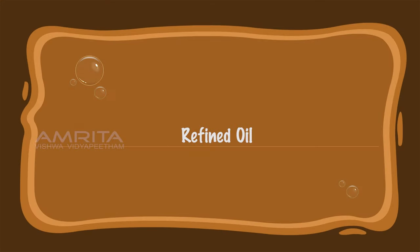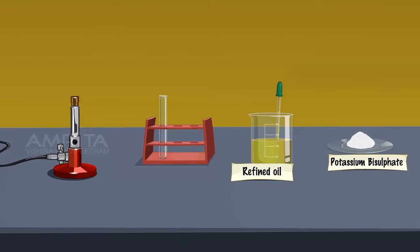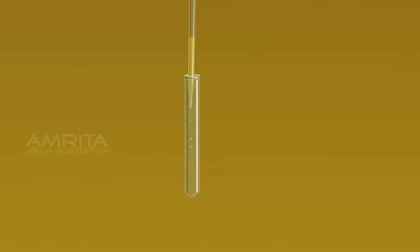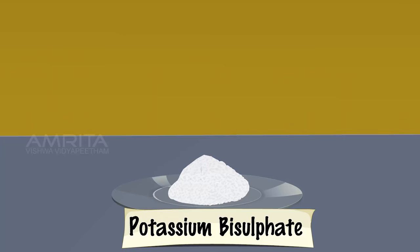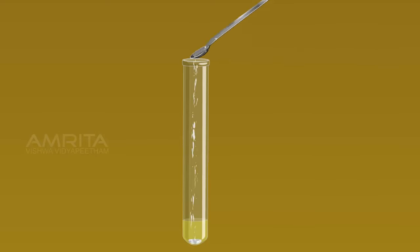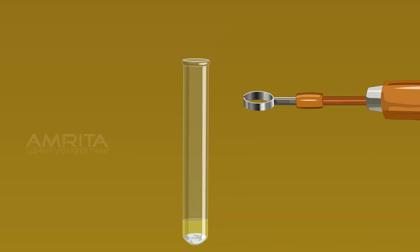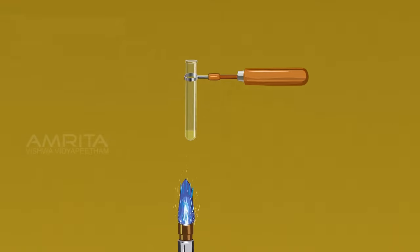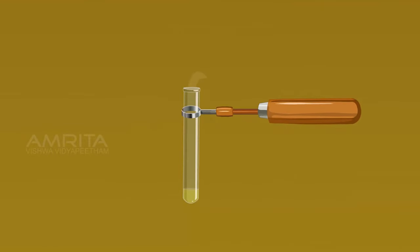Refined Oil. Using a dropper, take a small amount of refined oil in a test tube. Using a spatula, take a small quantity of potassium bisulphate crystals and add them into the test tube. Hold the test tube with the test tube holder and heat it over the Bunsen burner. When fat is heated strongly in the presence of a dehydrating agent like potassium bisulphate, the glycerol portion of the molecule is dehydrated to form an unsaturated aldehyde called acrolein, which has a pungent irritating odour.